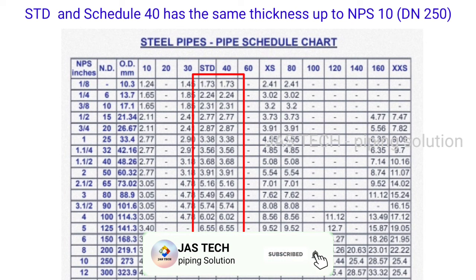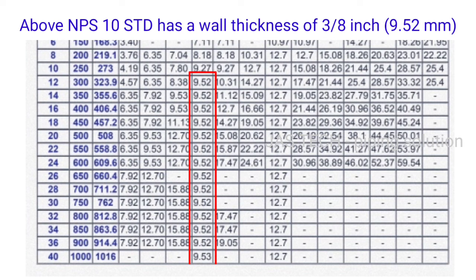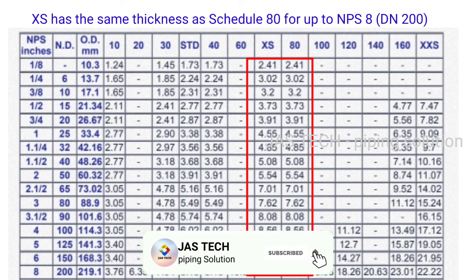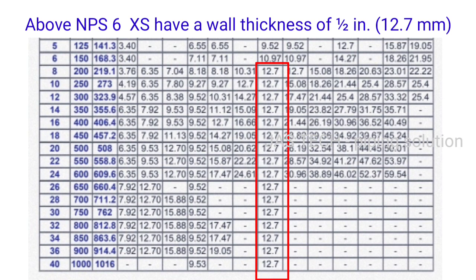Some important notes about the schedule chart: Standard and Schedule 40 have the same thickness up to 10 inch (DN 250). Above 10 inch, Standard has a wall thickness of 3/8 inch, that is 9.5 mm. Extra Strong has the same thickness as Schedule 80 for up to NPS 8 inch (DN 200). Above NPS 6 inch, Double Extra Strong has a wall thickness of 1/2 inch, that is 12.7 mm. Good luck, thanks for watching.